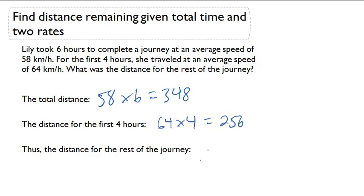Therefore, the distance for the rest of the journey has to be the difference between the two: 348 minus 256 equals 92 kilometers.